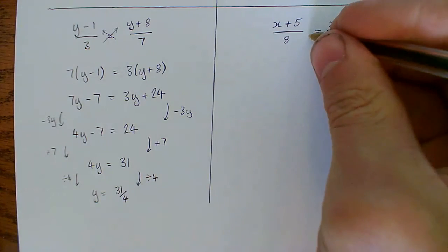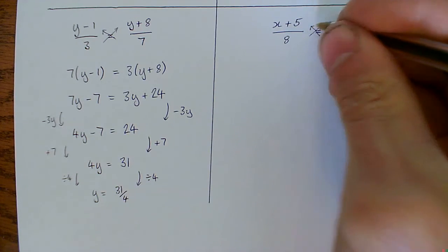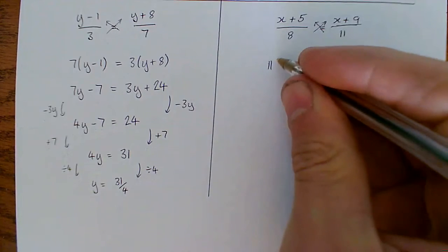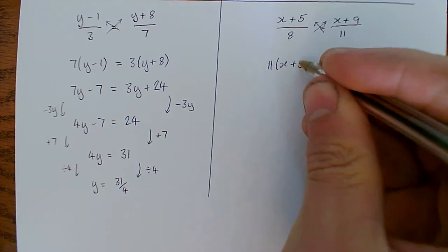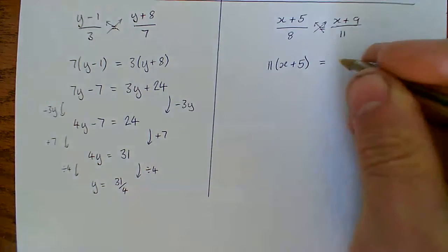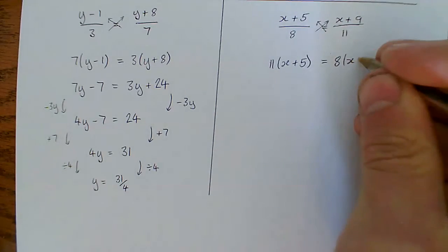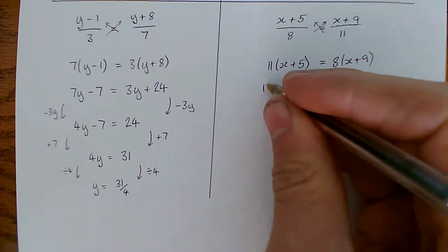Okay, so laying out the cross multiplying. We're doing that times that and that times that. So 11 lots of this equal to 8 lots of that. Multiply out the brackets.